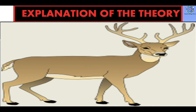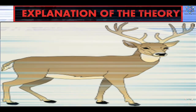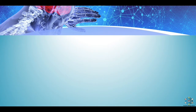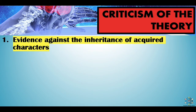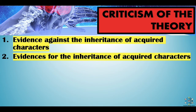Cave animals have lost their eyes due to disuse and the dark environment they live in. The deer is thought to have developed its present speed through continuous effort of running to protect itself from enemies. These are the examples which explain the theory of Lamarckism. Now, what are the criticisms of the theory? There is evidence against the inheritance of acquired characters as well as evidence for it.